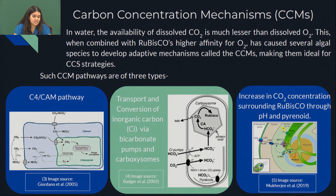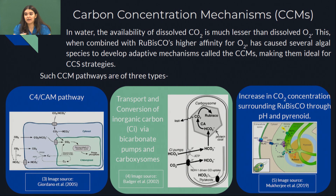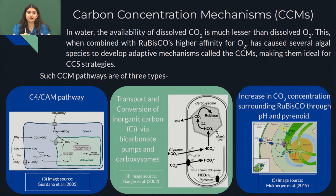There are three main types of CCM strategies. The first is the C4 or CAM pathway, which is a dual-phase pathway. During the dark phase or at night, CO2 is absorbed by the plant and converted into an organic acid, most commonly malic acid — a four-carbon compound, hence the name C4. Then during the light phase or daytime, these organic acids are decarboxylated back to CO2. A large amount of CO2 then develops inside the cell, and therefore rubisco has a much higher chance of binding with CO2 rather than O2.